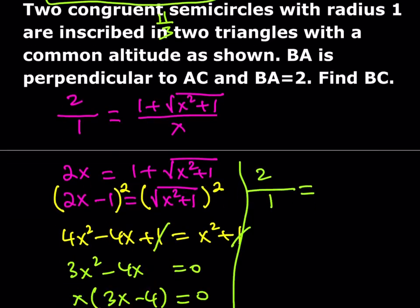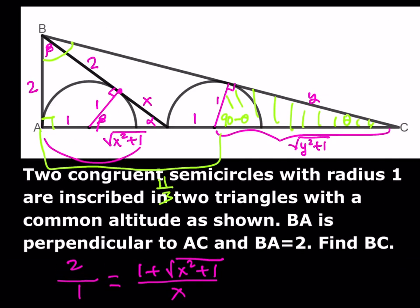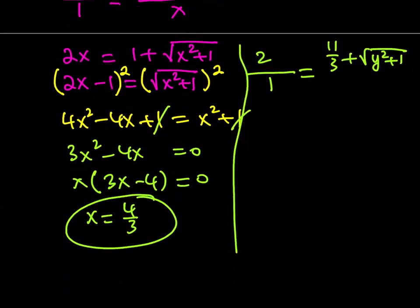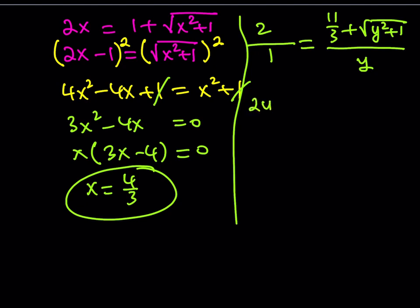It checks. So we have 11/3 plus the square root of y squared plus 1 for the side across from 90 minus theta in the large triangle. In the smaller one, 90 minus theta corresponds to y. Cross multiplying gives 2y equals 11/3 plus the square root of y squared plus 1.